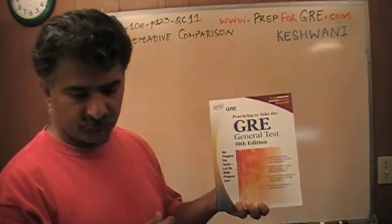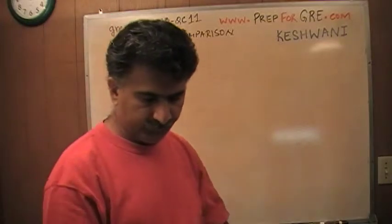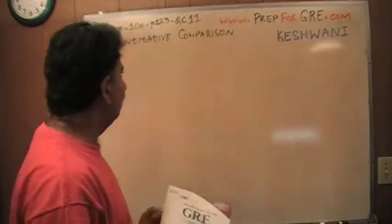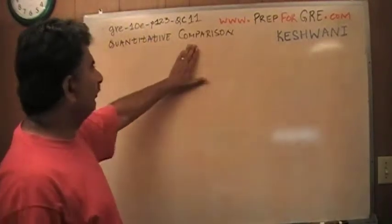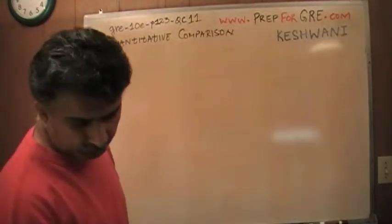This is what you need to practice for the real exam. This book consists of seven exams. The problem I'm about to solve is on page 123, quantitative comparison question number 11. Let's take a look at it.